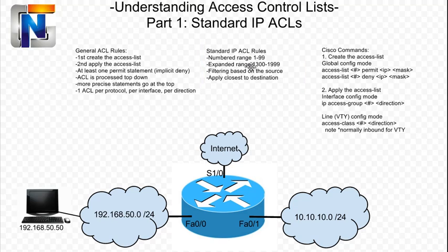This next spot here is rules pertaining directly to standard IP access control lists. So when we're creating our access list, we can use these numbers to signify that it is a standard IP access list. Standard IP access lists always filter based on the source. So if we're writing our list, we need to write that list based on where the traffic is coming from. When we apply that list, we need to apply it on an interface on the router that is closest to the destination network. So the list itself is based on the source, but then we need to apply the list closest to the destination.